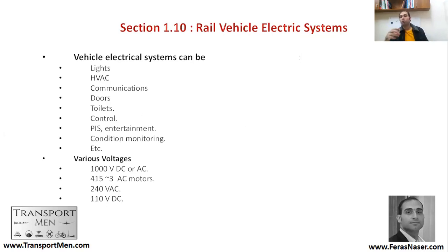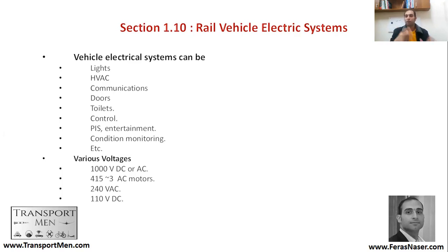For rail vehicle electrical systems, you have lights, HVAC, communication, doors, toilets, control, passenger information systems, entertainment, and condition monitoring systems — all described as the vehicle electrical system. They get various voltages up to 1000V DC or AC depending on the feed. An overhead line supplies 25,000V AC, a third rail supplies 750V DC, an induction motor takes 450V three-phase AC, entertainment systems use around 240V AC, and some systems use 110V DC. Power electronics convert between these voltages.